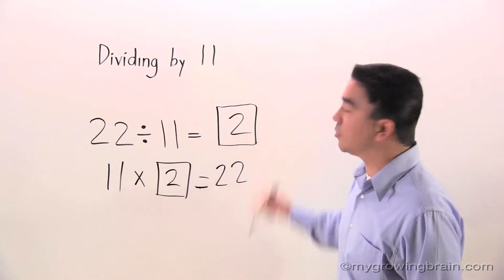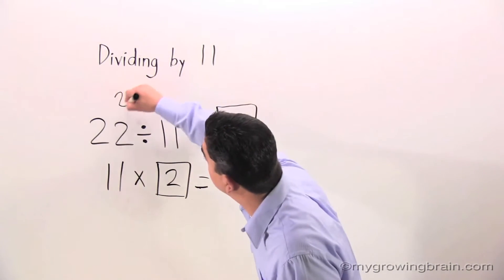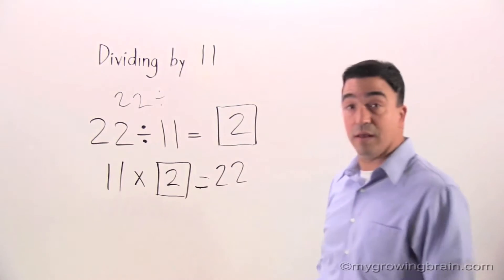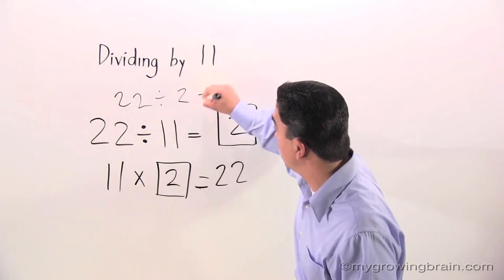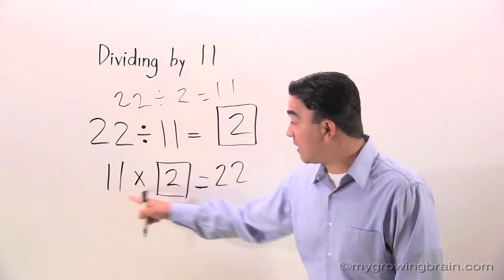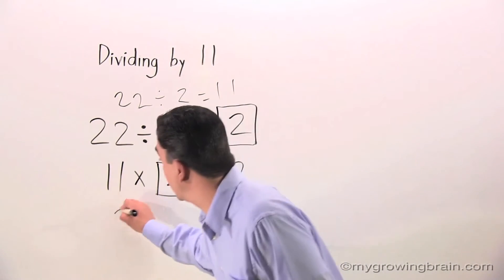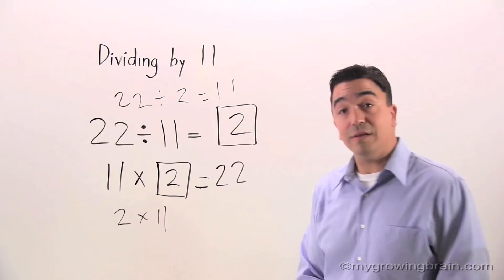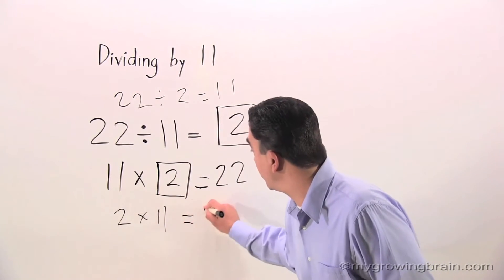22 divided by 11 equals 2. If we know that, then we know that 22 divided by 2 equals 11. Now, if we know 11 times 2 equals 22, then we also know that 2 times 11 equals 22.